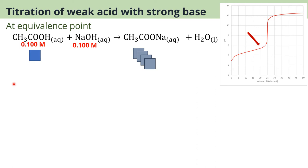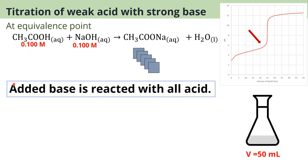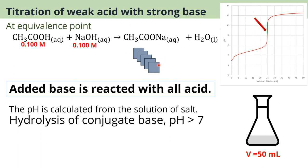Moving on to the equivalence point. When we add more base, it reacts with all remaining acid — no more base, no more acid. Total volume is 50 ml. Right now we only have salt. Unlike the salt of strong acid and strong base, this salt comes from a weak acid. So this salt will show hydrolysis of the conjugate base, which makes the pH higher than 7. The equivalence point has pH more than 7.